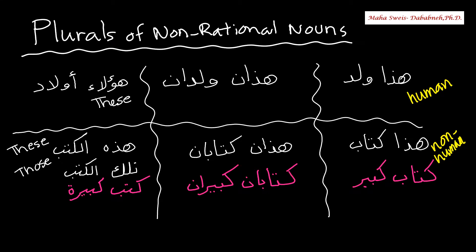This is another practice video on rulers of non-rational nouns. As I mentioned before, non-rational means non-human. I'm adding a lot of examples here for human nouns as well, because I want you to see the whole picture — to compare human with non-human — but the whole point is only this topic.